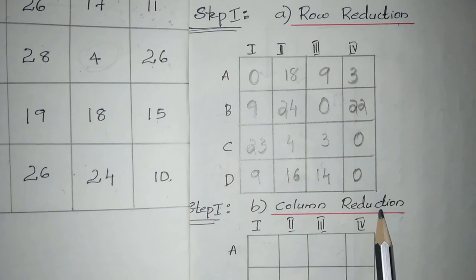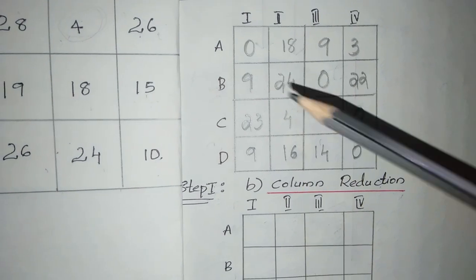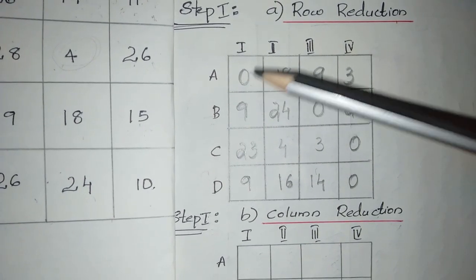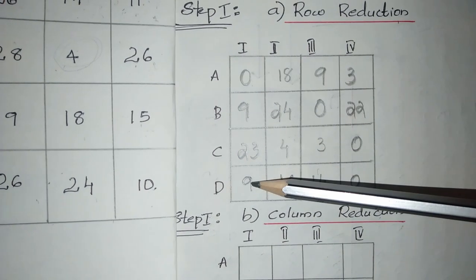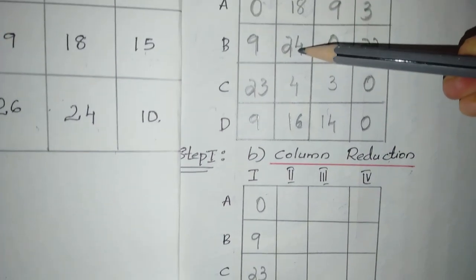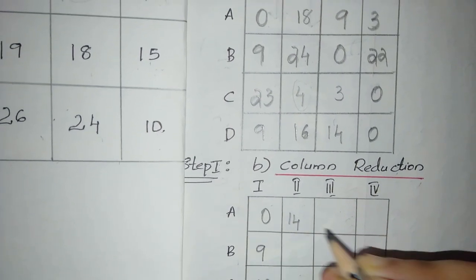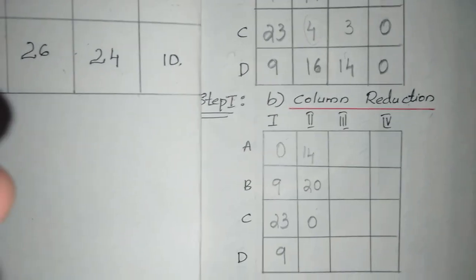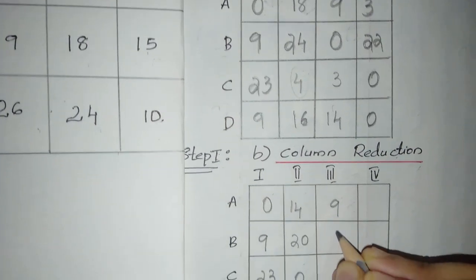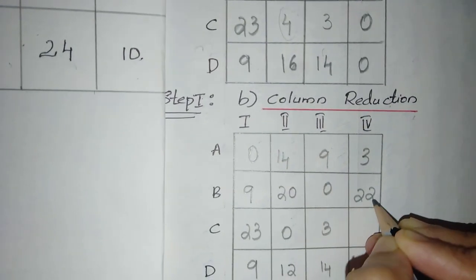Now for column reduction, we consider the row-reduced table and subtract the minimum value of each column from all entries of that column. First column minimum is 0, so values remain: 0, 9, 23, 9. Second column minimum is 4: 18−4=14, 24−4=20, 4−4=0, 16−4=12. Third column minimum is 0, values remain: 9, 0, 3, 14. Fourth column minimum is 0, values remain: 3, 22, 0, 0.